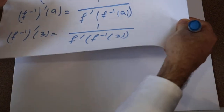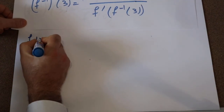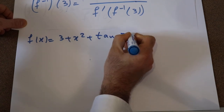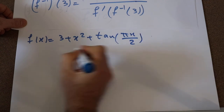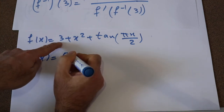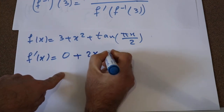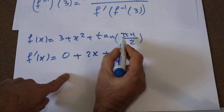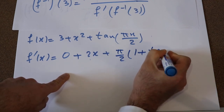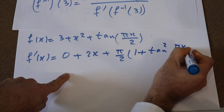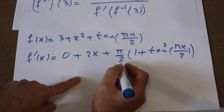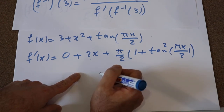Let me write this equation again. The original equation was f(x) equals 3 plus x² plus tangent(πx/2). So the derivative f prime(x) will be equal to 0 plus 2x plus the derivative of tangent(πx/2), which equals π/2 times (1 plus tangent²(πx/2)). If it is not clear how to calculate this derivative, please write in the comment section and I will explain how to do that.